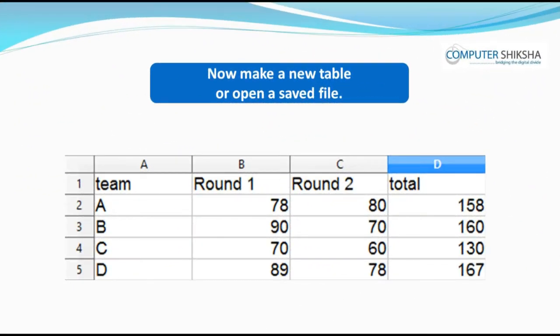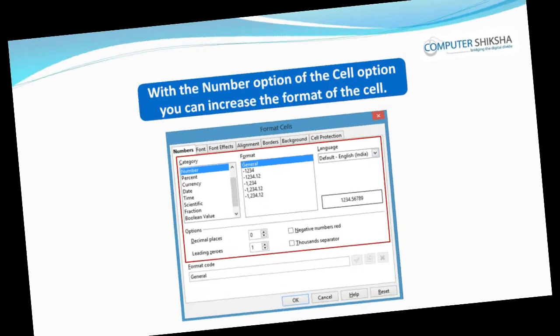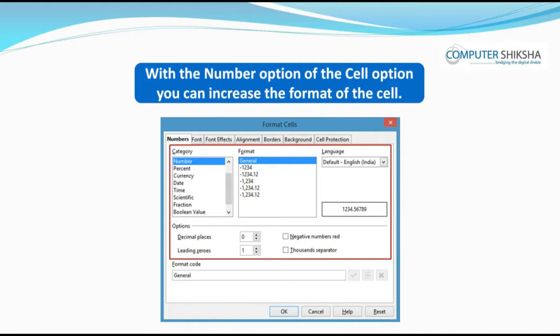Make a new table or open a saved file. Let us now learn about the Cell option of Format. With the Number option, you can change the formatting of the numbers. You can convert standard numbers into decimals, percentages, and you could even apply a country's currency before the number.